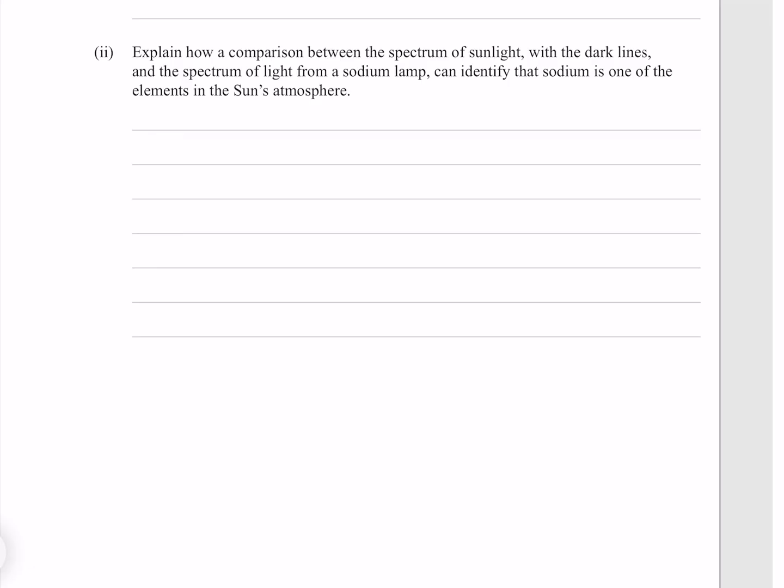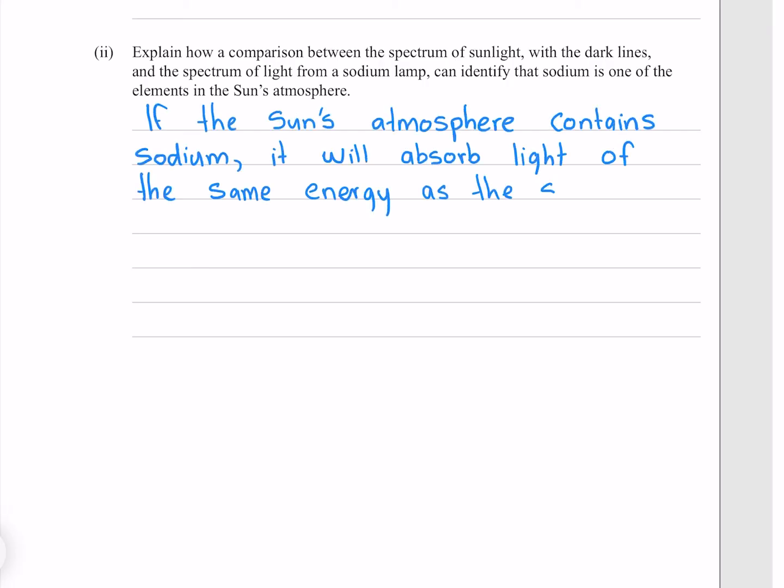Explain how a comparison between the spectrum of sunlight with the dark lines and the spectrum of light from a sodium lamp can identify that sodium is one of the elements in the sun's atmosphere. If the sun's atmosphere contains sodium, it will absorb light of the same energy as the sodium lamp and therefore the same wavelength.